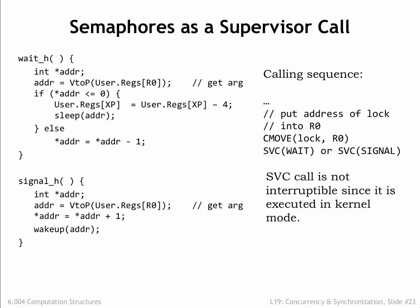Here are the OS handlers for the WAIT and SIGNAL supervisor calls. Since supervisor calls are run in kernel mode, they can't be interrupted, so the handler code is naturally executed as a critical section. Both handlers expect the address of the semaphore location to be passed as an argument in the user's program. The WAIT handler checks the semaphore's value, and if it's non-zero, the value is decremented and the handler resumes execution of the user's program at the instruction following the WAIT supervisor call. If the semaphore is 0, the code arranges to re-execute the WAIT supervisor call when the user program resumes execution.